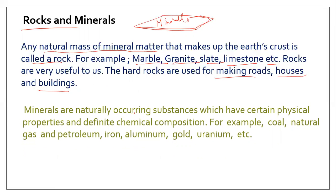Next, let's come to minerals. Minerals are natural substances that have certain physical properties and chemical composition, which is why they exist in different forms. Examples include coal, natural gases, petroleum, iron, aluminium, gold, and uranium. There are many different types of minerals found on Earth that are useful in different ways.